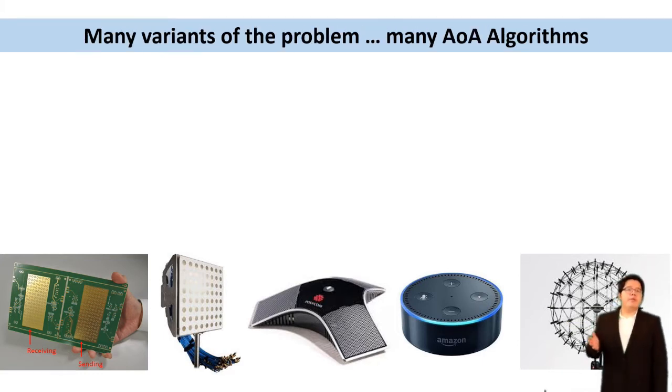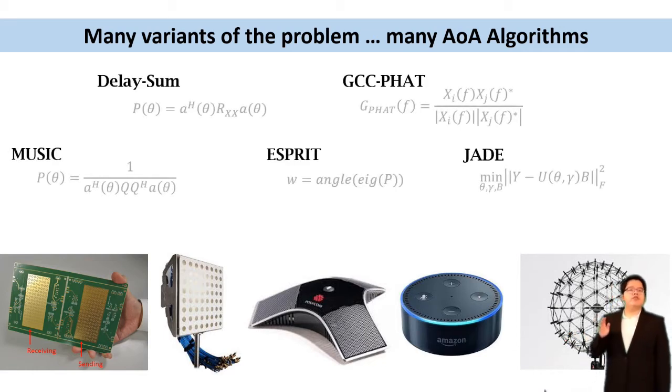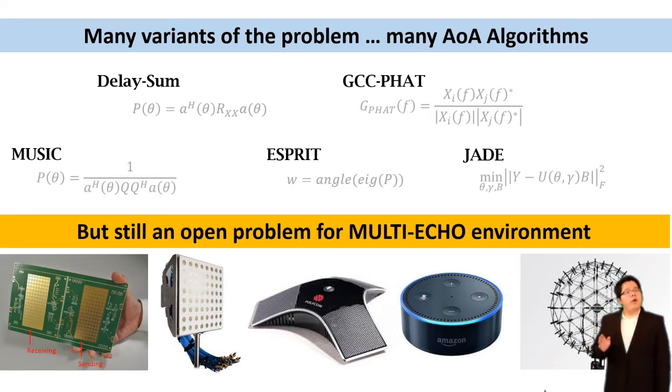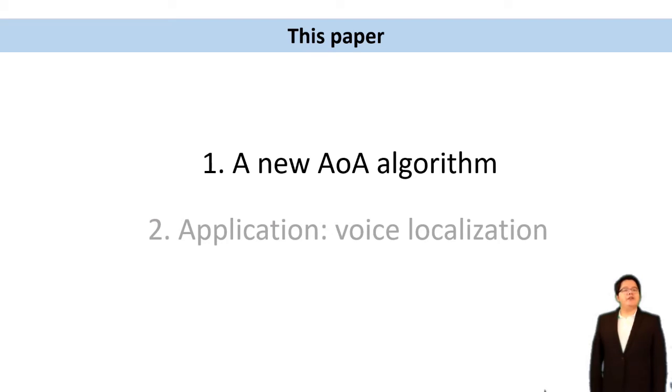AOA is an important and well-researched problem, so there are many variants and also many excellent works solving this problem like GCC-PHAT, MUSIC, etc. However, AOA is still an open problem under some conditions. In this work, we are solving this problem considering a multi-echo environment. I'll first present a new AOA algorithm and later show how it could be used in a voice localization application.